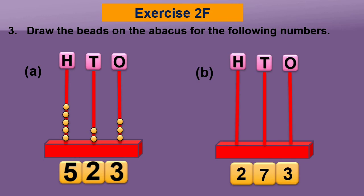Next, here we have the number 273. In the number 273, there are three ones, seven tens, and two hundreds. Draw three beads in the ones spike: one, two, three. Seven beads in the tens spike: one, two, three, four, five, six, seven. And two beads in the hundreds spike: one, two.